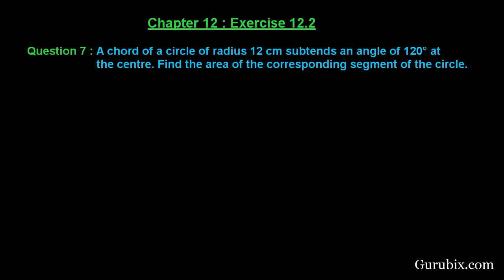Welcome friends, let us solve question number 7 of exercise 12.2 of chapter 12. The question says: a chord of a circle of radius 12 centimeters subtends an angle of 120 degrees at the center. Find the area of the corresponding segment of the circle. This is a very easy question — let us solve it.